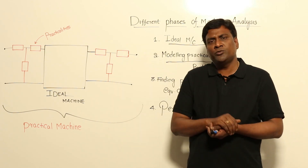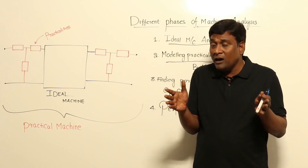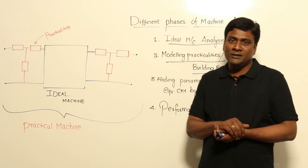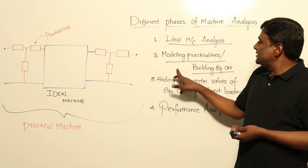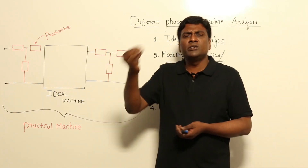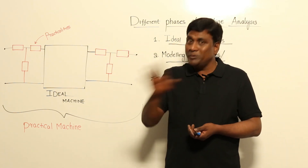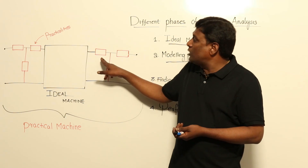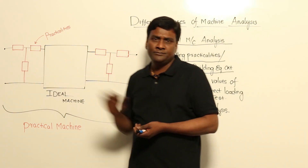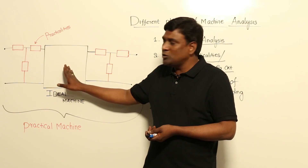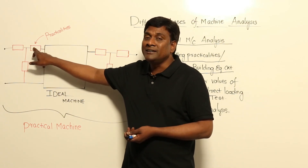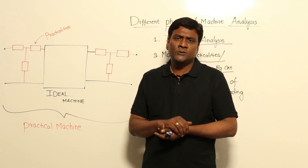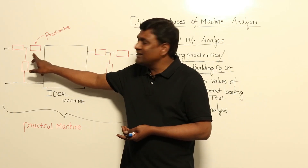In Phase 2, we do modeling of practicalities — building the equivalent circuit. An ideal machine is impossible to find, so a practical machine will have practicalities of losses, leakage, and non-linearity. In Phase 2 we try to model these practicalities. For example, no machine exists without leakage, but we analyze without leakage in ideal machine because leakage will be modeled in terms of other parameters at a later point.